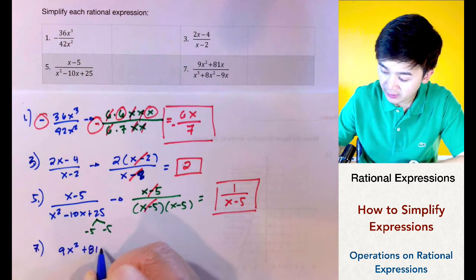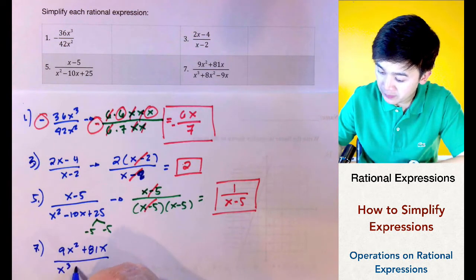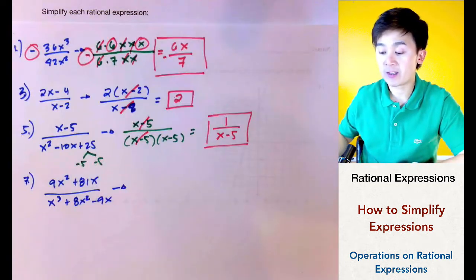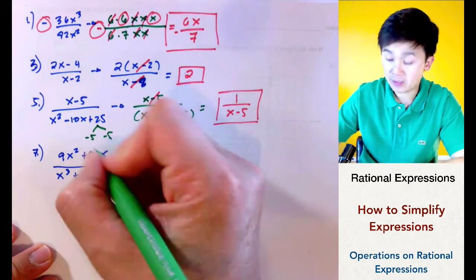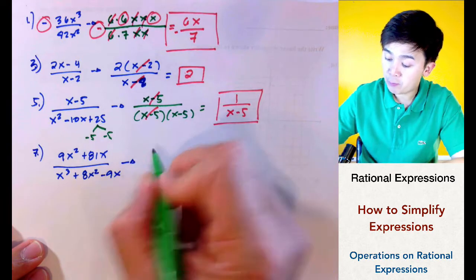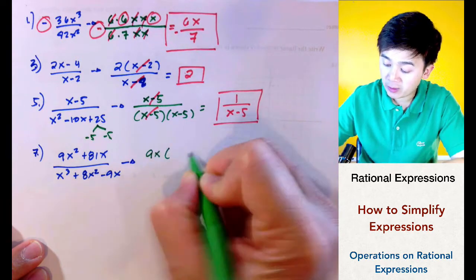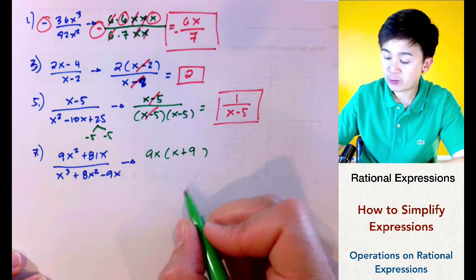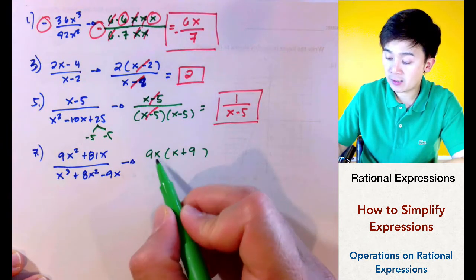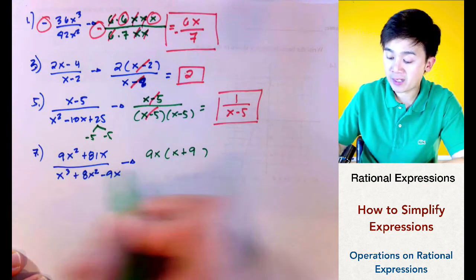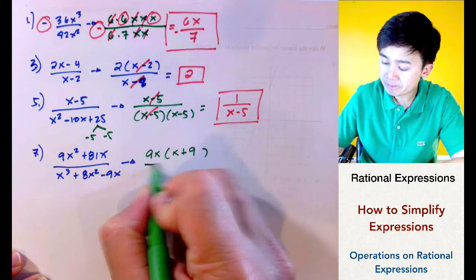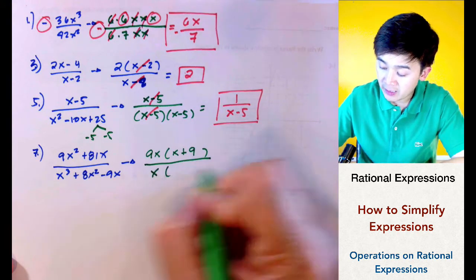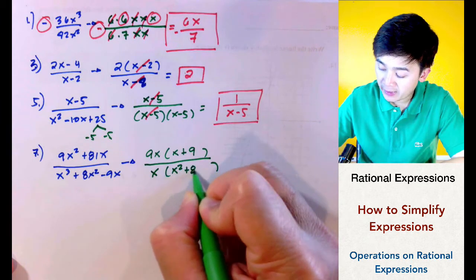For the last example, number 7, we have 9x squared plus 81x all over x cubed plus 8x squared minus 9x. For the numerator, we use the GCF of 9x, leaving x plus 9 inside. For the denominator, the common factor is x, so we factor it out and are left with x squared plus 8x minus 9 inside the parentheses.